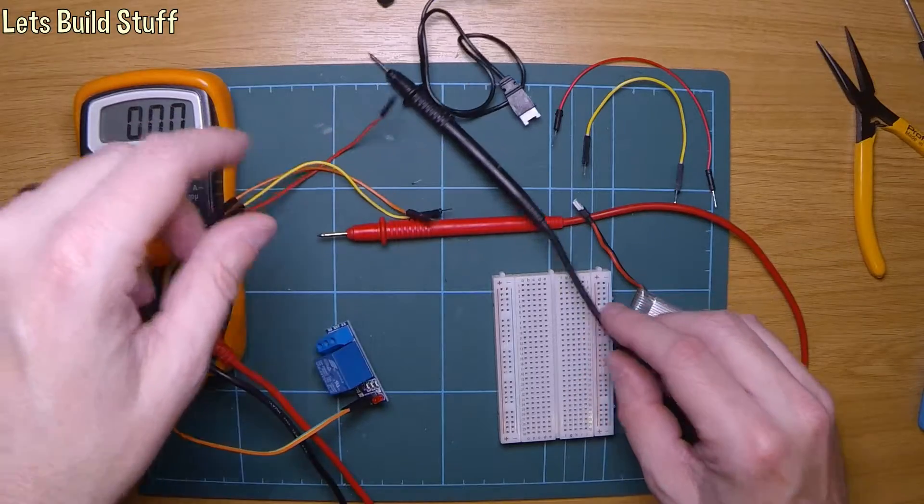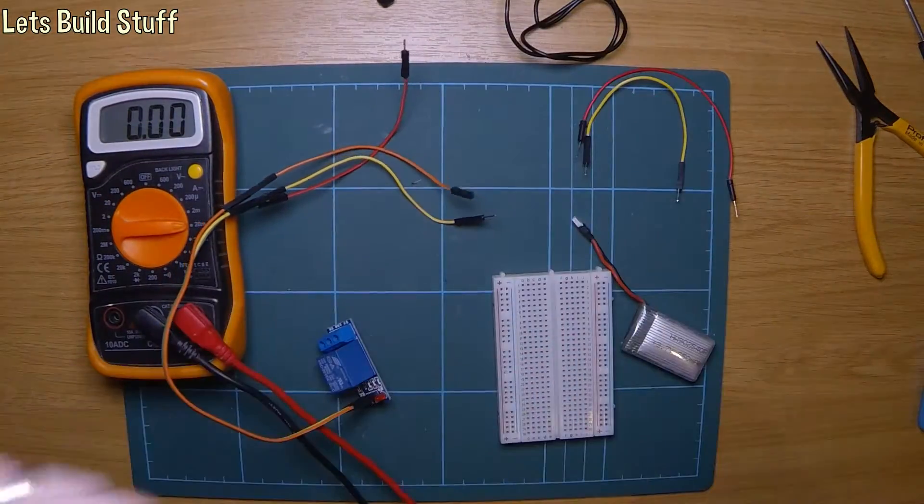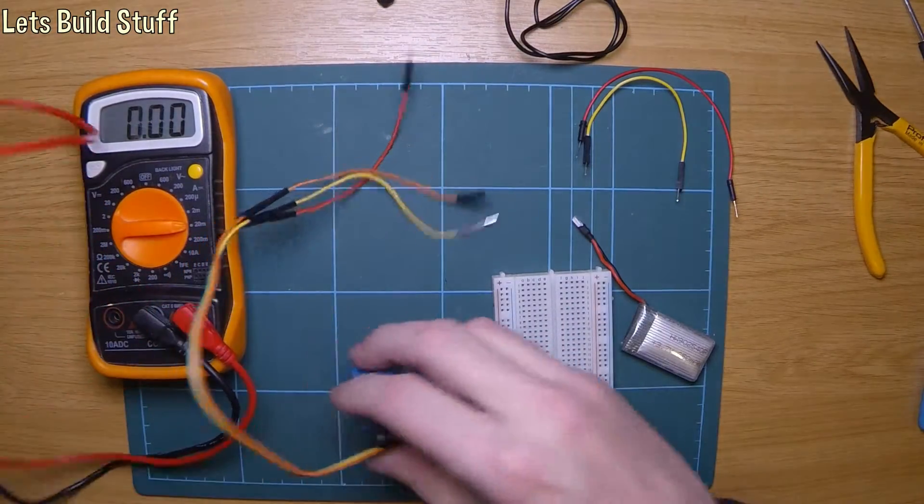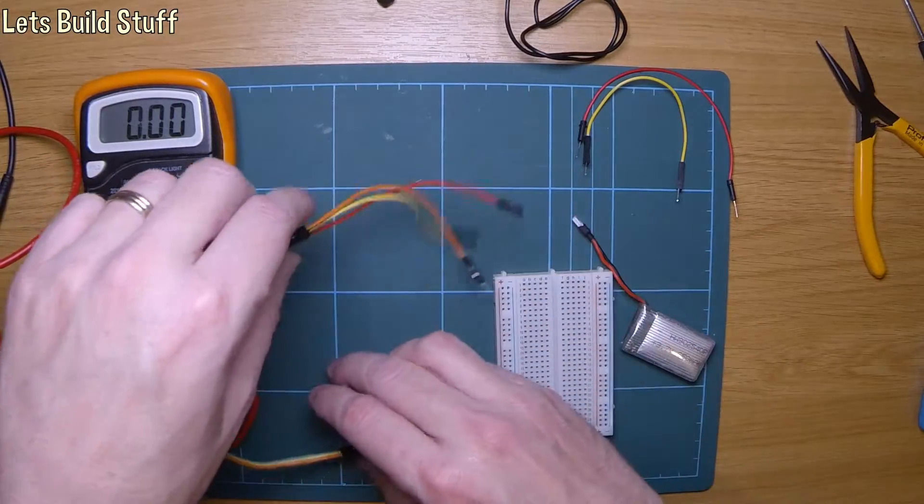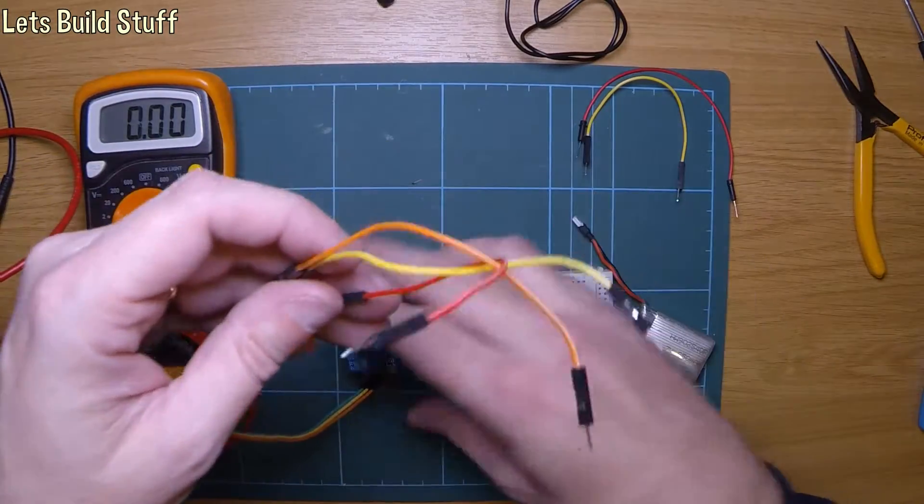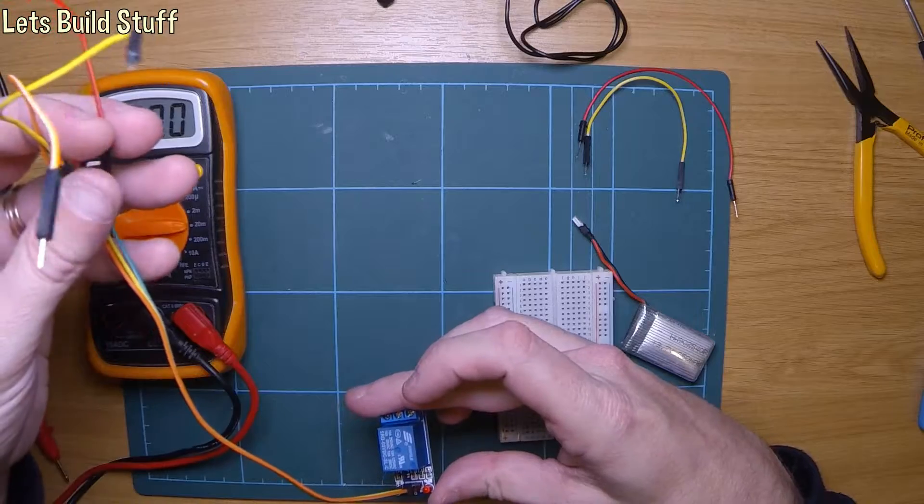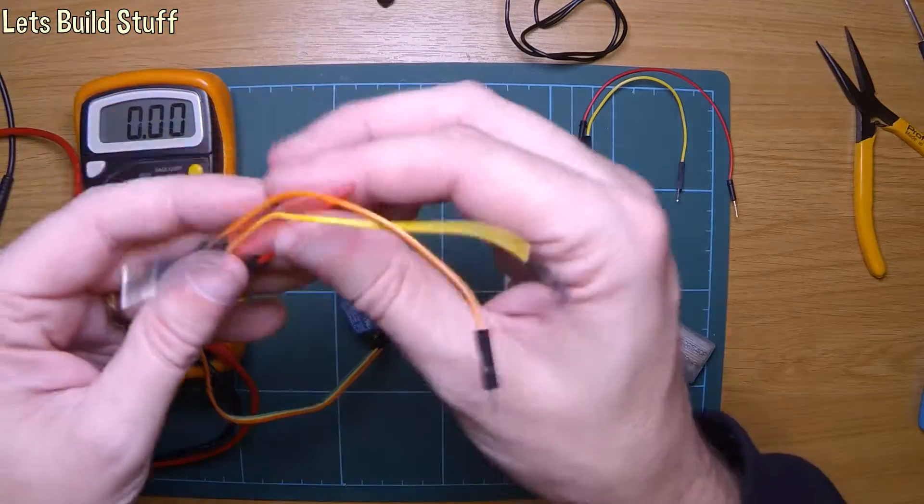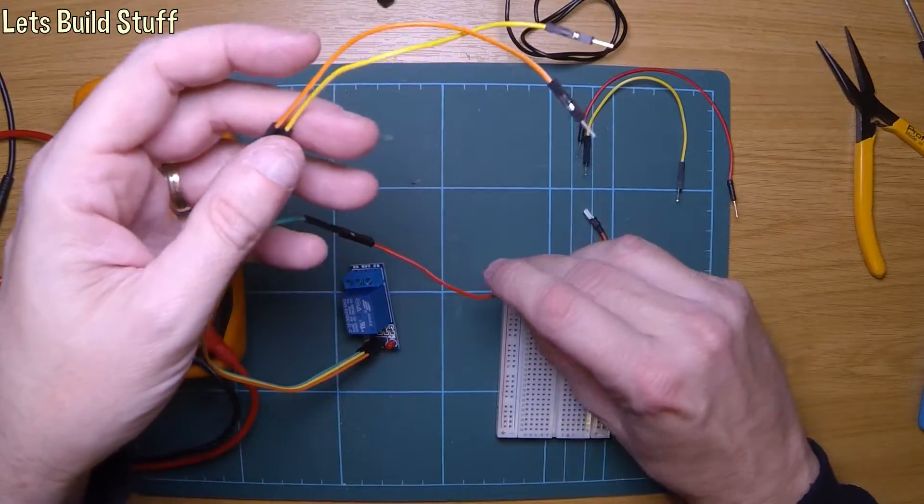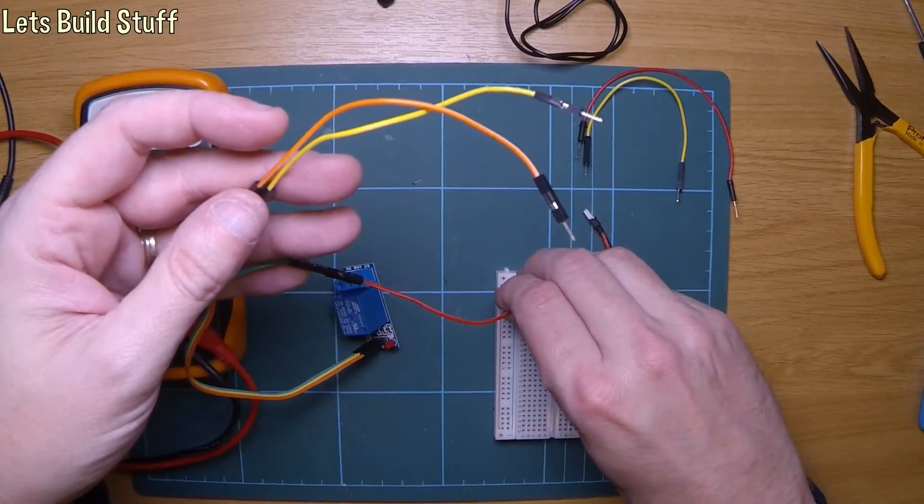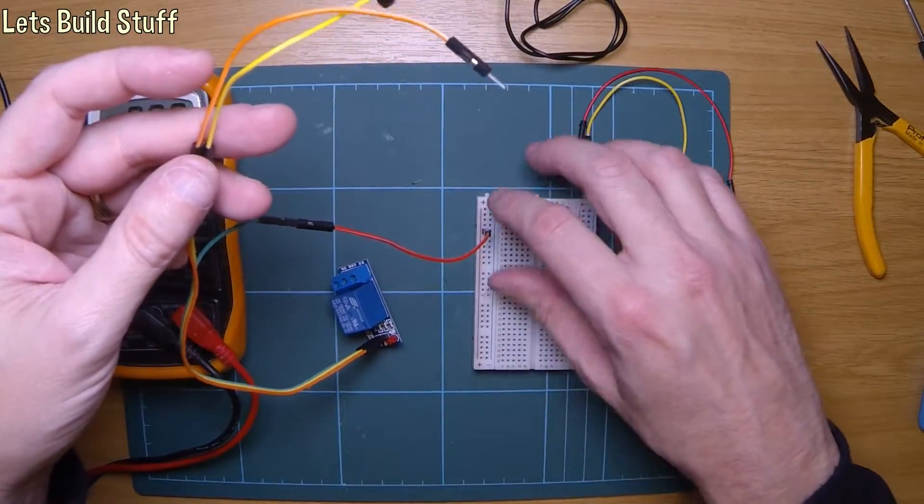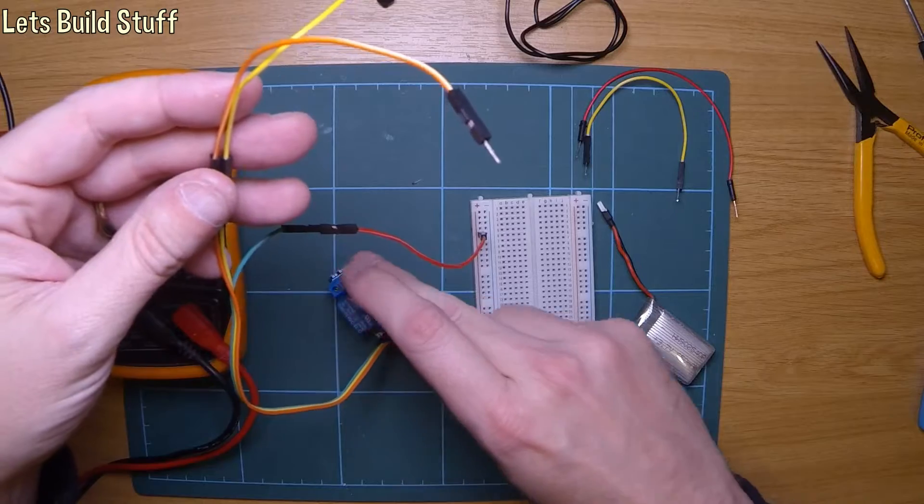I'm going to use a breadboard to wire it up just to make it a bit easier. The relay has three pins. We've got VCC which is the red one, and then ground which I'll use slightly further down on the breadboard because that end is quite loose now since I've been using this quite a bit.